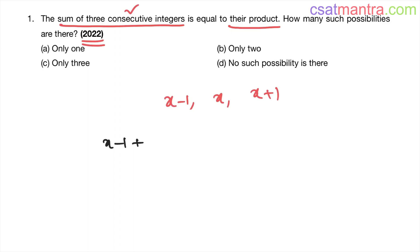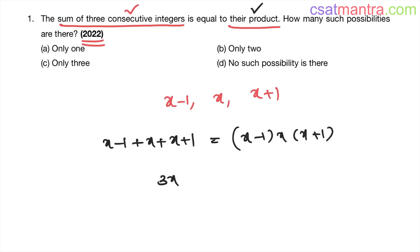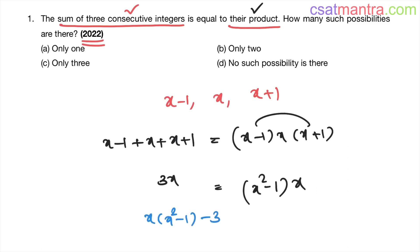Now, their sum: (x-1) + x + (x+1) equals their product (x-1)·x·(x+1). The sum simplifies to 3x. The product: (x-1)(x+1) = x²-1, using the identity (a-b)(a+b) = a²-b². So we get x(x²-1). Rearranging, x(x²-1) - 3x = 0.